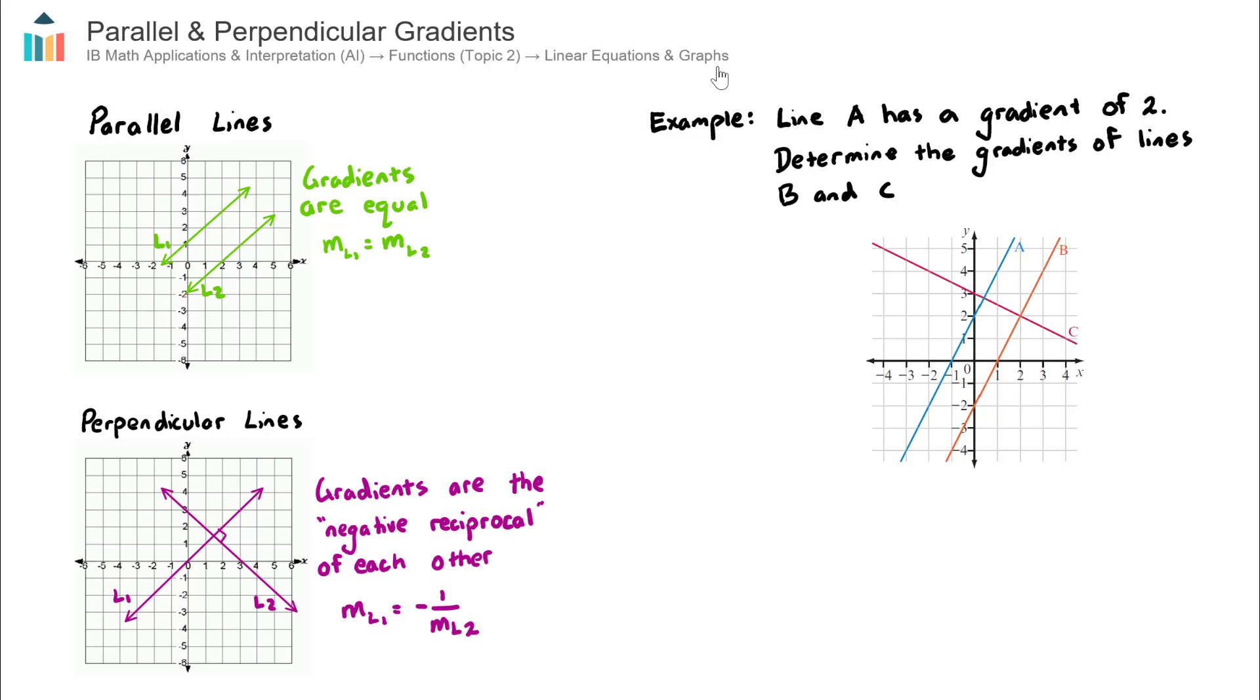There are two important concepts to understand and remember here. Let's firstly start with parallel lines. So parallel lines, you can see here with these two green lines, line 1 and line 2, they are parallel to each other, which means that they never get closer to each other or never get further apart. Think train tracks, they are just always the same distance apart at all times. Now the relationship between their gradients is that they are equal to each other. It's a pretty easy one to remember there.